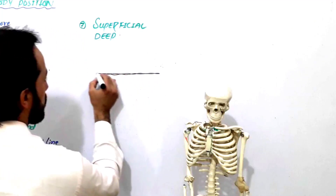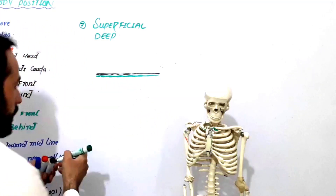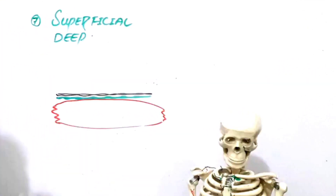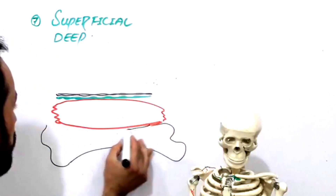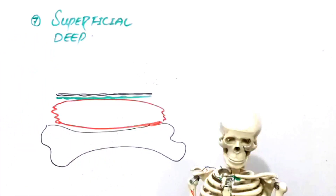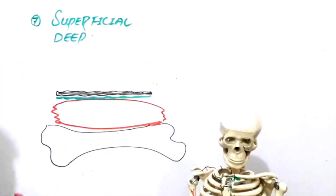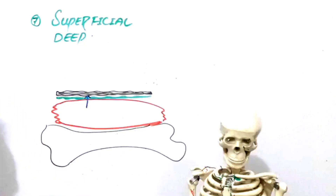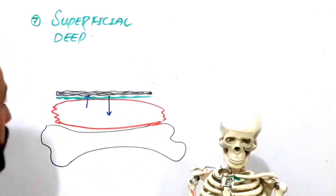This is your skin, and beneath the skin you have a connective tissue layer. Beneath that connective tissue layer you have your muscles — this is just a diagram for understanding, not an anatomical diagram — and then you have bones below your muscles. When you are going towards the skin, this is called superficial.